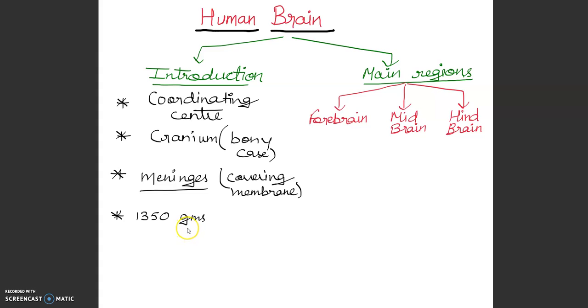The gray matter is present on the surface, the outer membrane, and the white matter is present on the inner side.